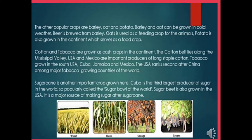Cotton and tobacco are also grown as cash crops. The cotton belt lies along the Mississippi Valley. USA and Mexico are important producers of long staple cotton. Tobacco is grown in the South USA, Cuba, Jamaica and Mexico. The USA ranks 2nd after China among the major tobacco growing countries of the world.